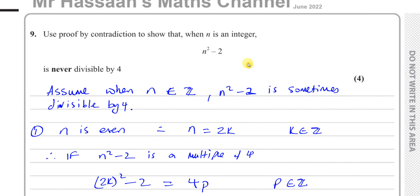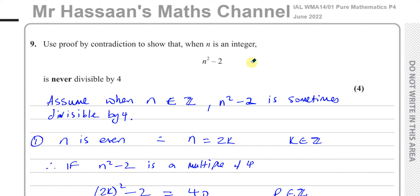That's the answer to question number 9 and concludes the whole June 2022 IAL P4 paper from Edexcel. Other questions from this paper can be found in the playlist linked at the end of the video. Other proof questions from P4 are also linked, and you can subscribe by clicking the link. Thank you for watching, and see you soon.